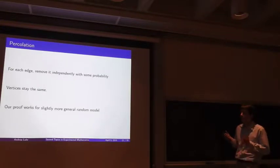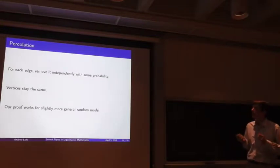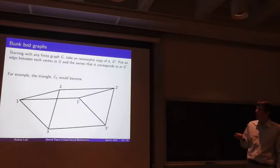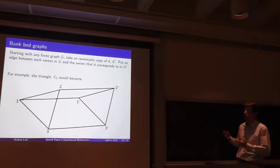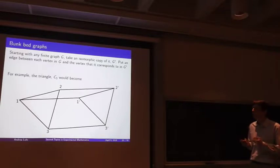We're going to remove an edge if a coin comes up tails. This is a slightly more general random model, where we're not requiring that each point has the same weighting. We only care that this edge has the same weighting as this edge, and both copies of G have the same weights.